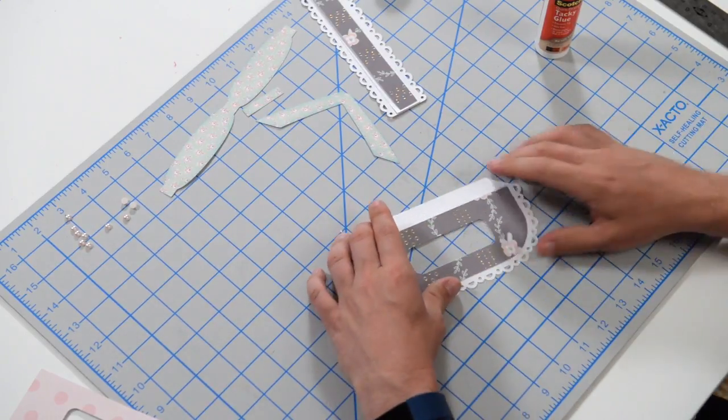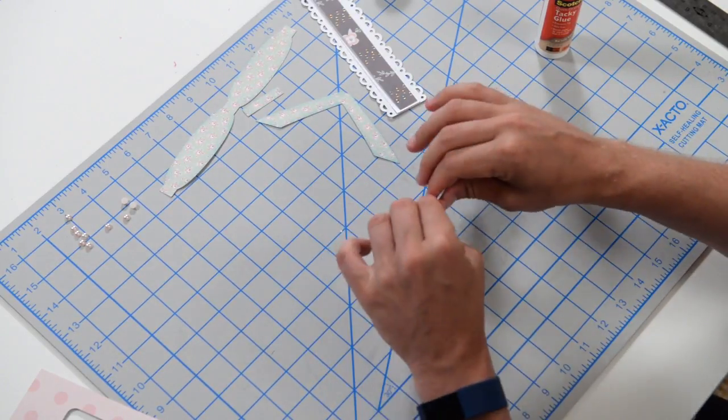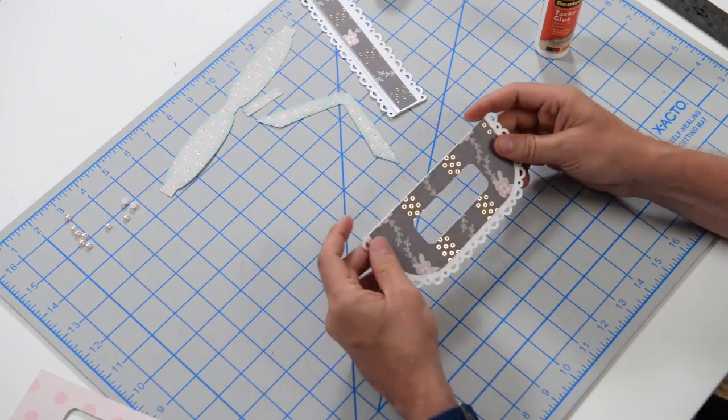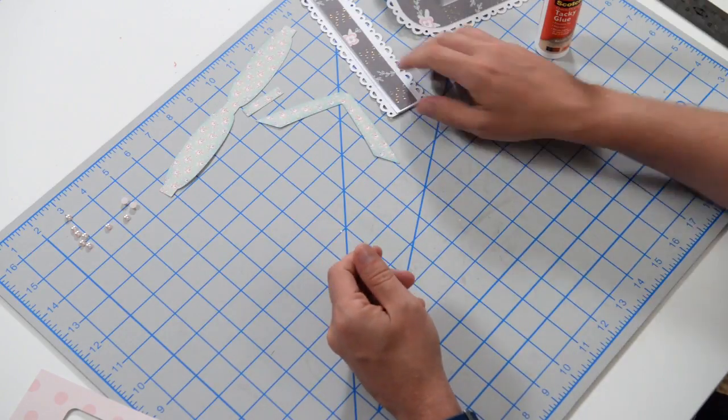And I'm just going to run my brayer over it. Okay. So we've got that put together. You can just put that off to the side for now. We'll use that in just a moment.